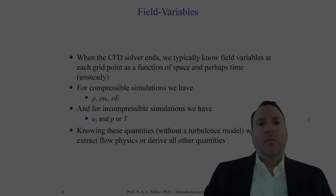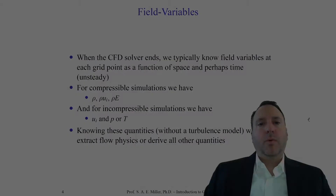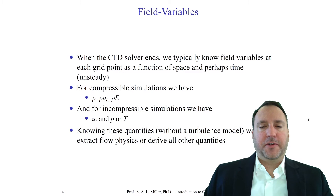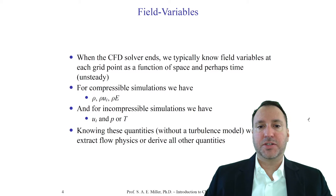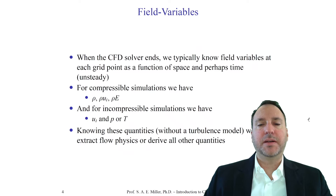What are the field variables? When we talk about field variables, we're speaking of the unknown variables which are now known through the numerical solution process. These represent variables that are dependent on everything else: boundary conditions, discretization, constants, etc. When the CFD solver ends successfully and you've done your checks like grid independence and convergence, we would typically like to know these variables at each grid point as a function of space and perhaps time. It can be a very large data set.